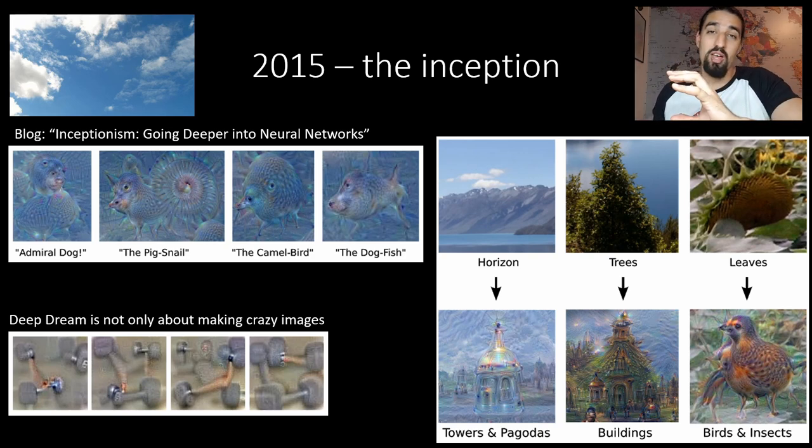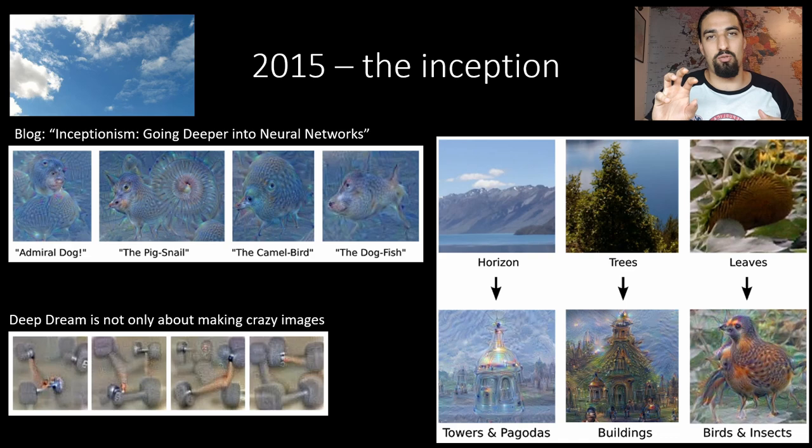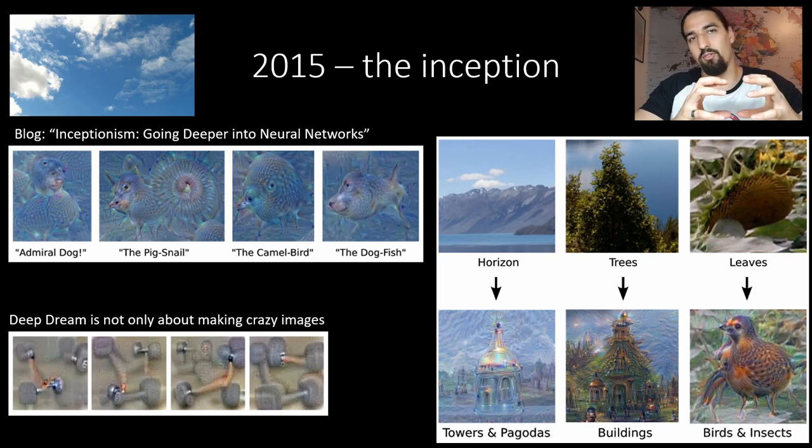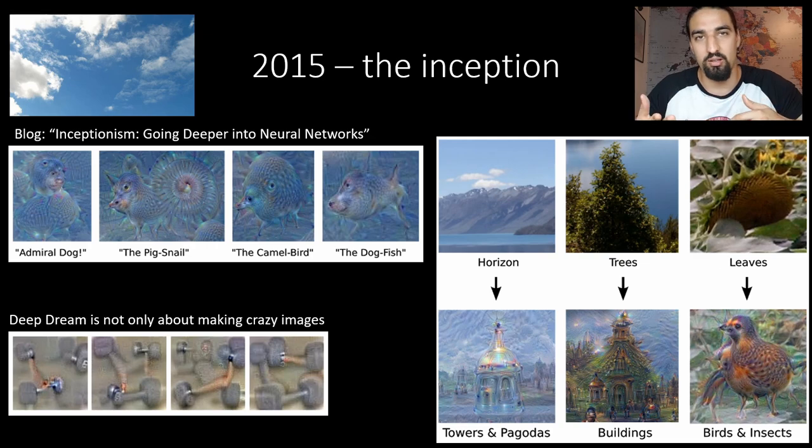What they actually told the network was hey, tell me what do you think a dumbbell is. Going in reverse and reconstructing the image they got these four images in the bottom left. You can see that the network actually learned to always expect to see some muscular hands of a weightlifter next to the dumbbell and did not manage to actually extract the concept itself of a dumbbell as an independent object not dependent on the context.